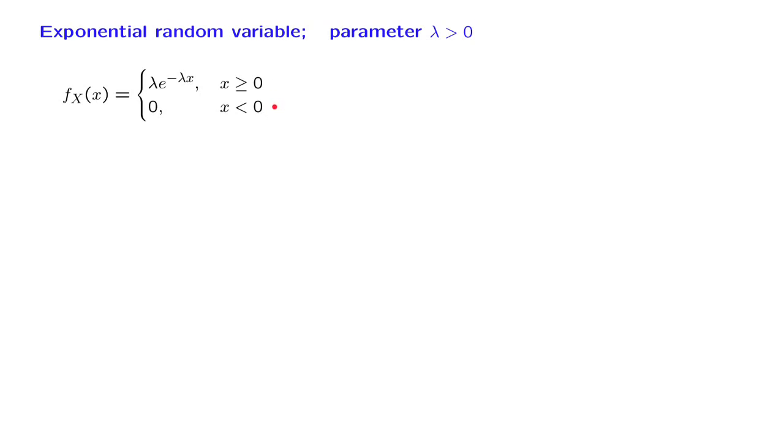Note that the PDF is equal to 0 when x is negative, which means that negative values of x will not occur, they have 0 probability, and so a random variable is a non-negative random variable. The shape of the PDF is as shown in this diagram. It's 0 for negative values, and then for positive values, it starts off at a value equal to lambda.